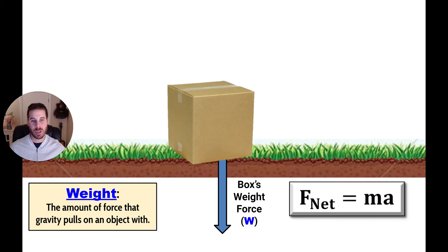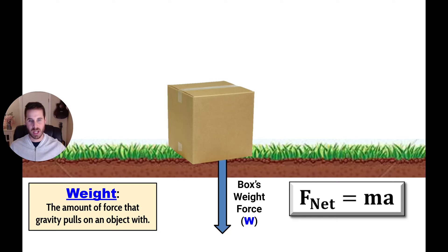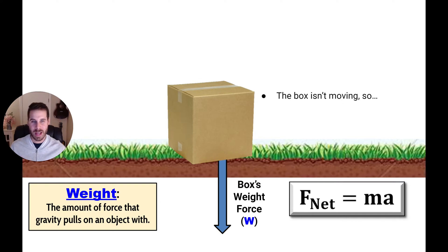We've learned about Newton's laws of motion, and Newton's second law is typically represented by an equation. It says that the net force on an object — meaning all the forces added up — is equal to the mass of the object multiplied by the acceleration of the object. Applying this to the box on the ground: the first thing we can notice is that the box is not moving. Whenever you put something on the ground and it just sits there, no motion is occurring.